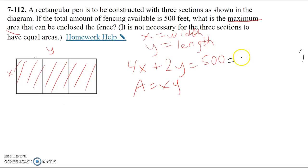So after subtracting 4x from both sides, we get 2y is equal to 500 minus 4x. Then I'm going to divide both sides by 2, giving us y is equal to 250 minus 2x. We need to remember to divide both parts by 2. So y is equivalent to 250 minus 2x.